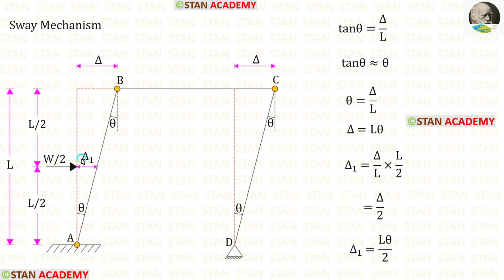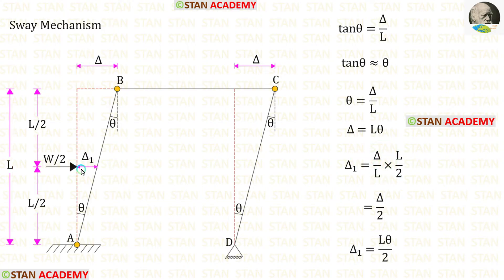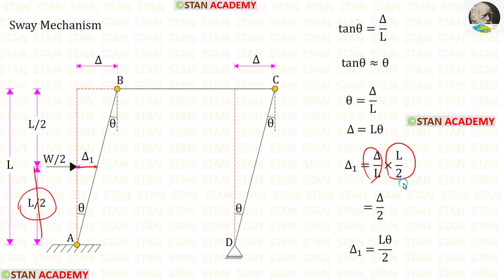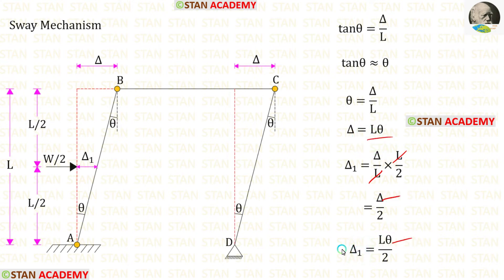Now let us find δ1. For height L the distance is δ. We need the distance at height L/2, so we multiply by L/2 and eliminate L. Substituting δ = Lθ, we get δ1 = Lθ/2.